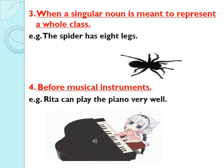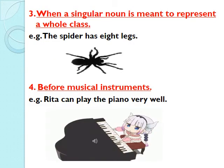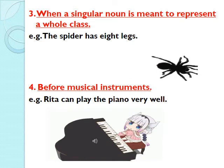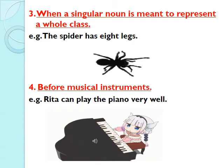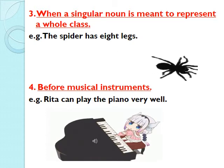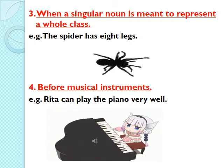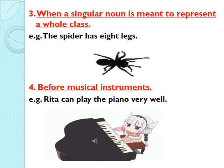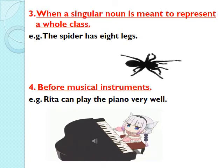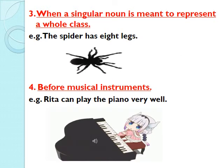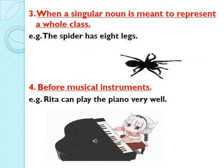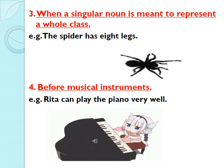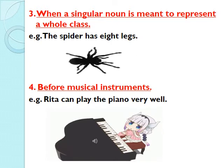We use article THE when a singular noun is meant to represent a whole class. For example: 'The spider has eight legs.' Here, spider is a singular noun representing the whole class — it means all spiders have eight legs.